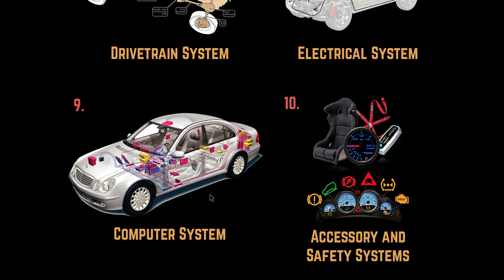And last but not least, number 10: accessory and safety systems. It's basically just for occupants' comfort, safety, security, and convenience. Common systems that you are probably very well aware of are air conditioning, sound system, power seats, power windows, and rear window defogger.